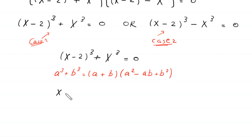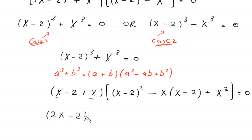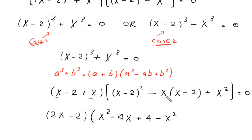So this will become x minus 2 plus x, times x minus 2 whole squared minus x times x minus 2 plus x squared, is equal to 0. Now x minus 2 plus x will become 2x minus 2. We expand x minus 2 whole squared, which becomes x squared minus 4x plus 4. Negative x times x becomes negative x squared, negative x times negative 2 gives plus 2x, plus x squared, is equal to 0.